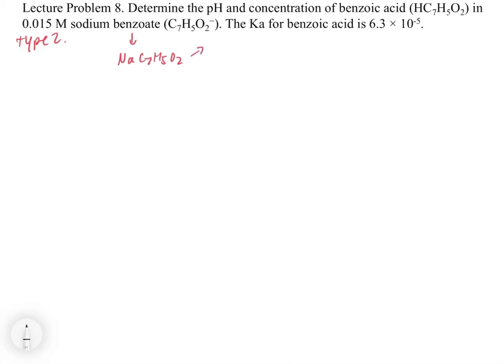We have two ions: Na+ and C7H5O2-. The Na+ we can automatically not worry about - that's neutral, a spectator ion, the conjugate acid of a strong base. The benzoate is the conjugate base of benzoic acid.